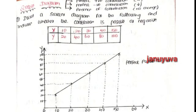Now, Scattered Diagram. First question: draw a scattered diagram for the following data and indicate whether the correlation is positive or negative. In this case, you will get values in X and Y axes. X values are 10, 20, 30, 40, 50. For Y: 20, 40, 60, 80, 100. You will mark the X-axis variables on the X-axis and the Y-axis values on the Y-axis.